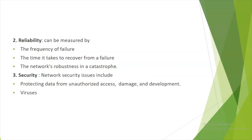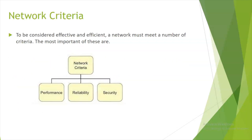The second network criterion is reliability. Reliability can be measured by the frequency of failure, the time it takes to recover from failure, and the network's robustness. The third criterion is security, which includes protecting data from unauthorized access, damage, and viruses.